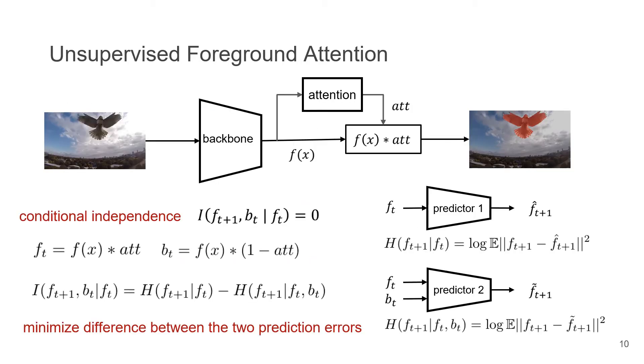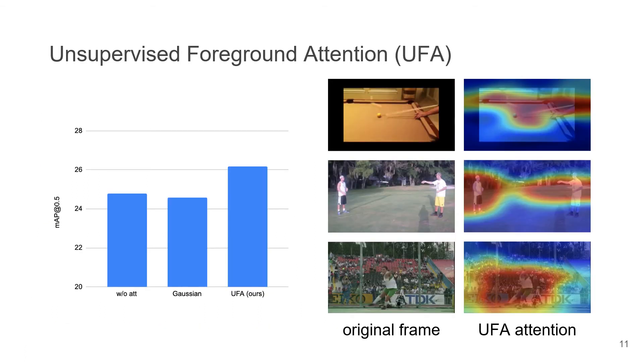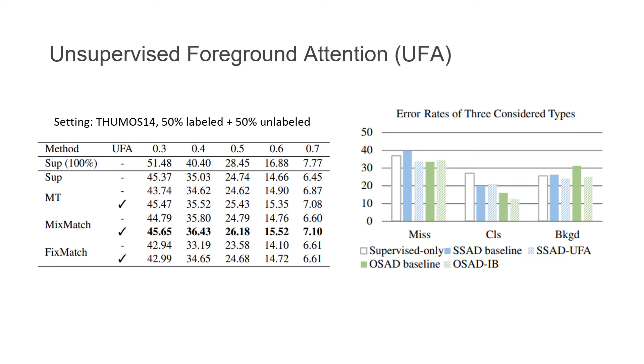And in practice, the minimization of the conditional mutual information can be done by a two-predictor game. Essentially, we are minimizing the difference between the two prediction errors. And in this way, the attention module gives the foreground mask. And from experiments, we can see that the attention weight visualization coarsely detects the foreground object. And the foreground attention can bring some improvement to the semi-supervised baseline, and the action completeness error is also reduced.